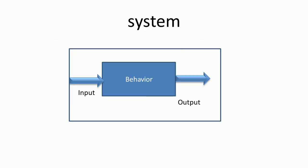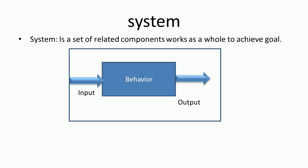Let us start with the first term: what do you mean by a system? Here we can see a simple schematic of a system which consists of a set of inputs, outputs, and behavior. The simplest definition of a system is anything that accepts input and produces output. More broadly, it is a set of related components that work as a whole to achieve a goal. The two important parameters are input, behavior, and output — where behavior translates the input into an output.